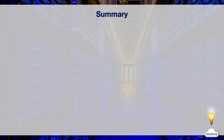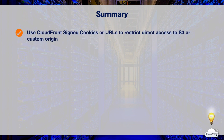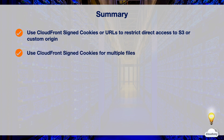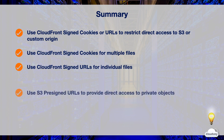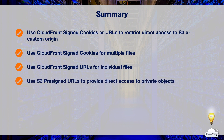In this episode, we've learned how to serve private content with CloudFront and S3. You can use CloudFront signed cookies or signed URLs to restrict direct access to S3 or other custom origins — including Amazon EC2, S3 buckets configured as website endpoints, Elastic Load Balancing, and your own HTTP web servers. Use signed cookies to restrict access to multiple files, signed URLs to restrict access to individual files, and S3 pre-signed URLs if you want to provide direct access to S3 private objects.